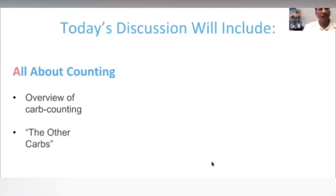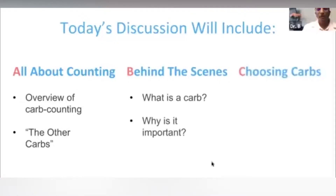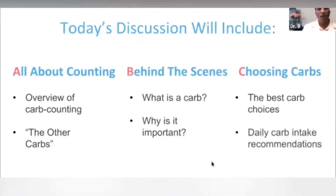We'll talk about the other carbs: fiber, alcohol, and other things that affect sugars but may not be carbs — they're not fats and proteins, so what do we do about those? We'll also go behind the scenes: what is a carb and why is it important in diabetes? And lastly, some actionable information on choosing carbs — what are the best carb choices, and how many carbs should I be eating?